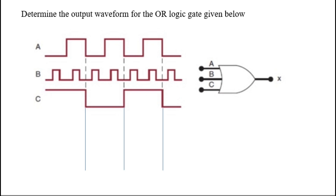Hello friends. In this video I will tell you how to draw the output waveform when all the input waveforms are given in waveform form, and also when a logic gate has three inputs. This is an OR gate with three inputs A, B, C given, and X is the output we need to find the waveform for.